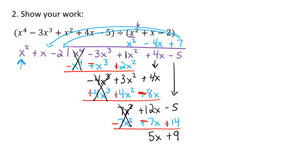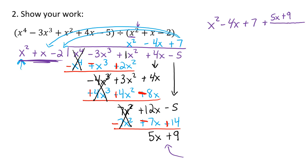Also keep in mind that they all line up: the 7 lines up with the 5 — those are constants; 4x lines up with 4x — those both have x's; those have x squareds. So once I fill up that whole top to the end I know I'm done, which means I have an answer: x squared minus 4x plus 7 plus the remainder, which is 5x plus 9 all over what we were dividing by, x squared plus x minus 2. And this is our answer.